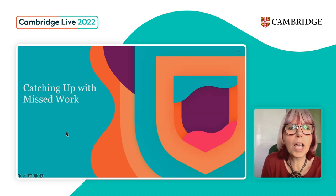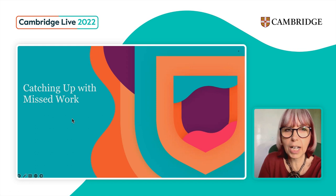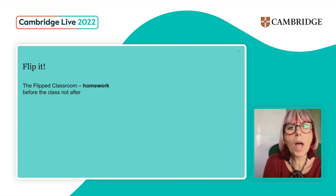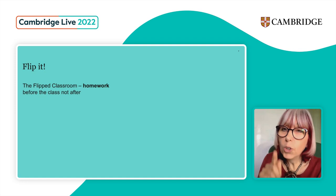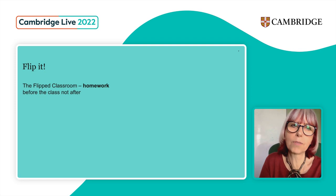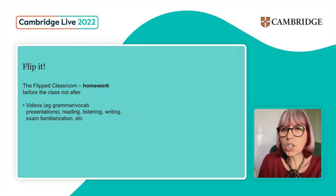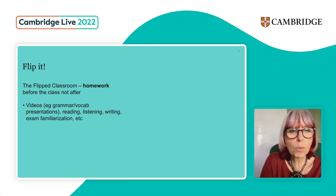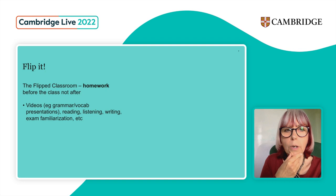Let's look at a couple of ways students can catch up with work they've actually missed. I want to start with the flipped classroom — where students do work at home before the class, not after it. They're preparing themselves for the class. For example, they might be watching a video that explains some grammar or vocabulary, doing some reading, listening, or writing, or familiarising themselves with the exam.